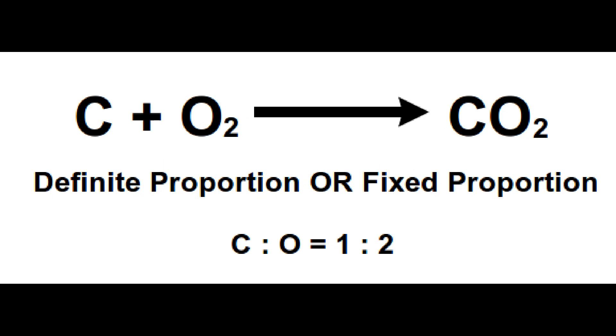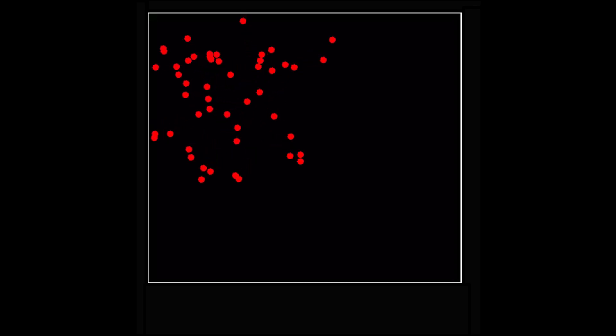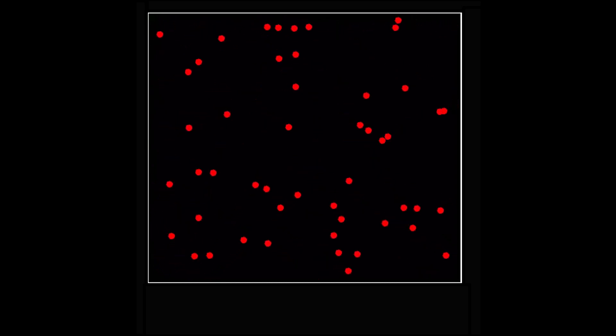If you spray scent in one corner of room, after some time, whole room becomes full of scent. Scent is a type of gas and all the gases follow this property, known as diffusion.